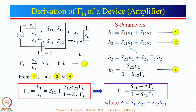A given device is specified by its S-parameters at the desired frequency and given biasing conditions. We have an incoming wave a1, an incoming wave a2, a reflected wave b1, and a reflected wave b2. This device is connected with the source which has a source impedance, and there is a load. The objective here is to find out gamma_input. Let us start with S-parameters, which we have already discussed in our previous lecture.